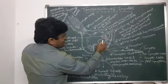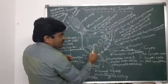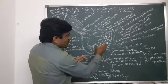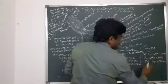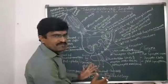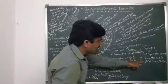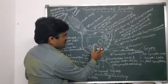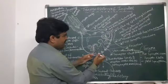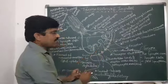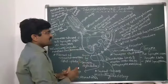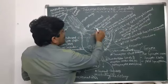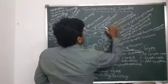The axon terminal area is called the presynaptic membrane, and the other part is the postsynaptic membrane. The synaptic cleft lies between them. These three — presynaptic membrane, synaptic cleft, and postsynaptic membrane — together make up the synapse. There are also special kinds of receptors present in this area to receive whatever signals are transmitted.